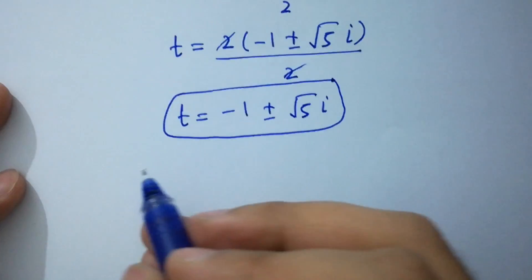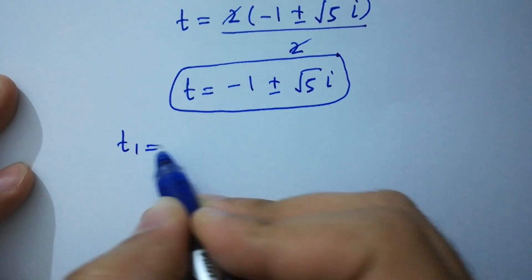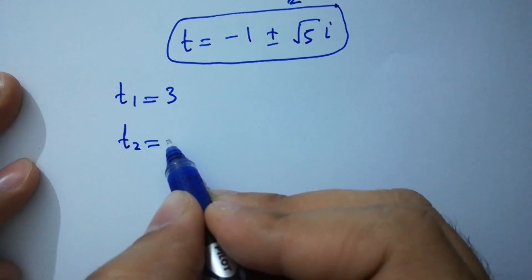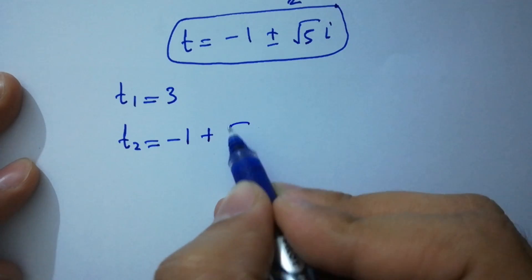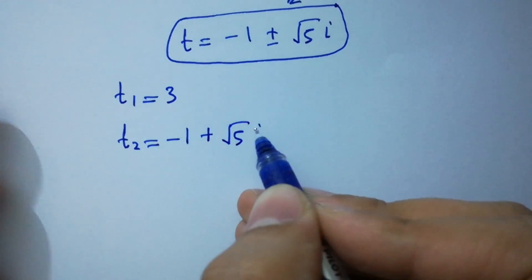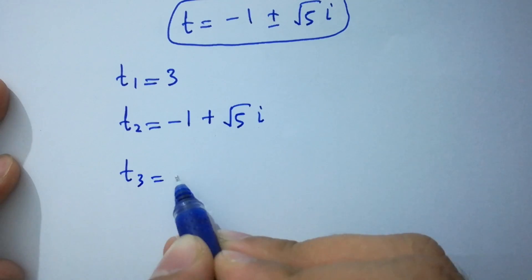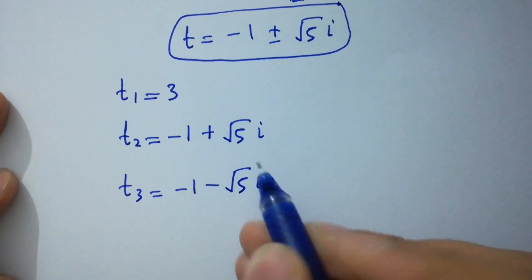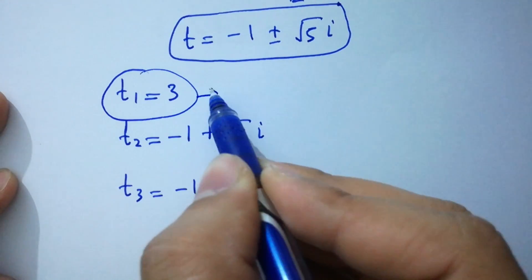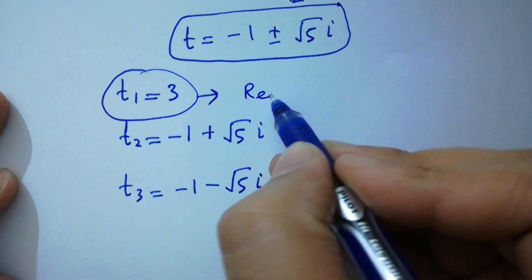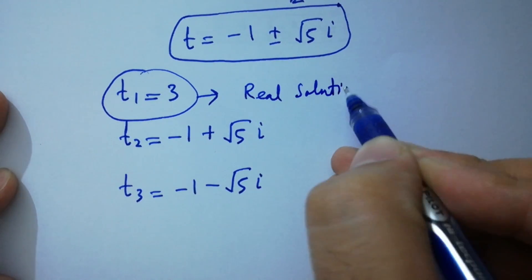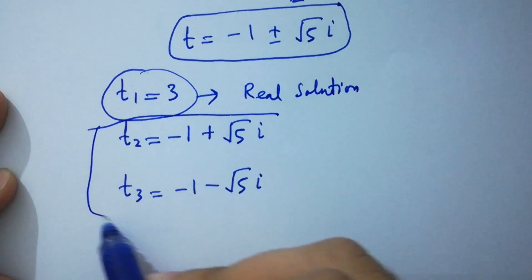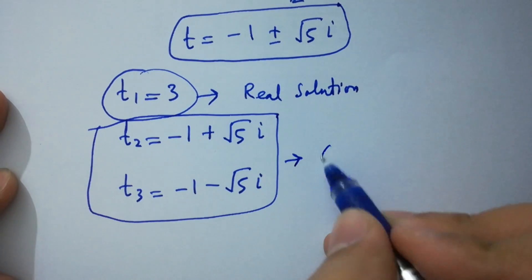So we have t1 equal to 3, t2 equal to minus 1 plus square root of 5i, and t3 equal to minus 1 minus square root of 5i, where t1 equal to 3 is the real solution, and t2 and t3 are complex solutions.